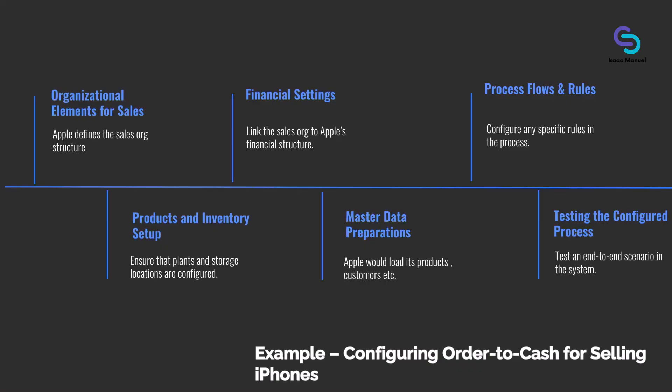During configuration, Apple might realize some changes they want. For instance, SAP's default process might assume immediate delivery upon order. Apple might choose to enable a delivery block on certain large orders until payment is confirmed. The configuration activity for delivery blocks is optional — defaults exist — but Apple could add a new reason like 'awaiting payment' as a delivery block reason. This is a simple example of tailoring the process via config values.